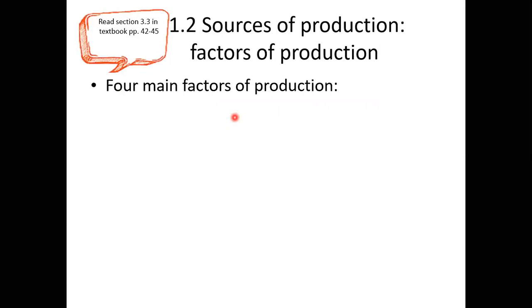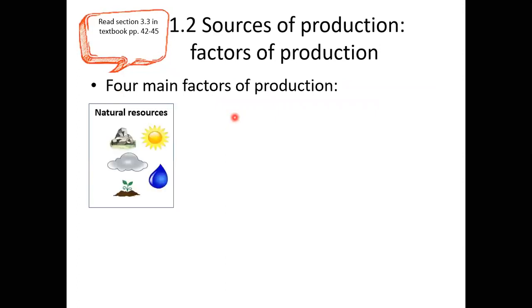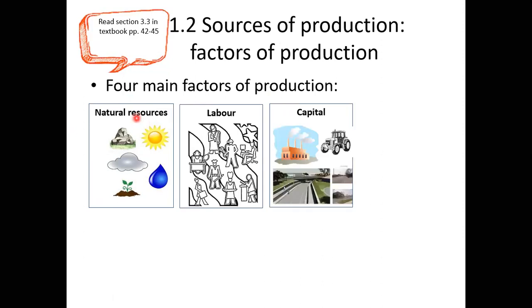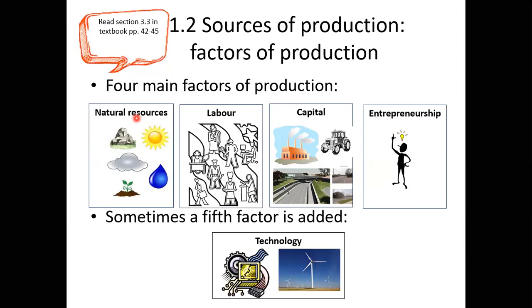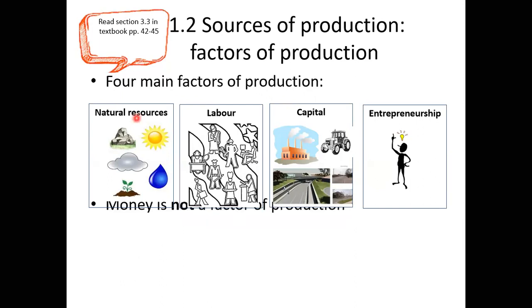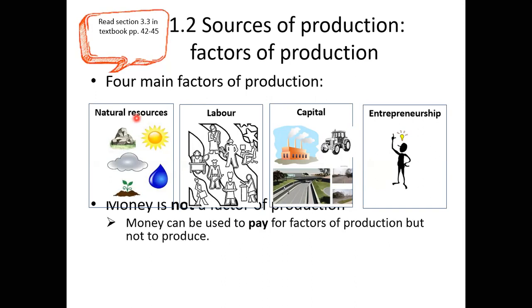Sources of factors of production: we have four main factors of production. These include natural resources — also called land — labor, capital, and entrepreneurship. However, there is a fifth factor of production now taken into account, which is technology. Money is not a factor of production; money is used to pay factors of production.